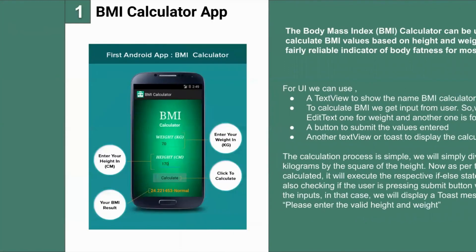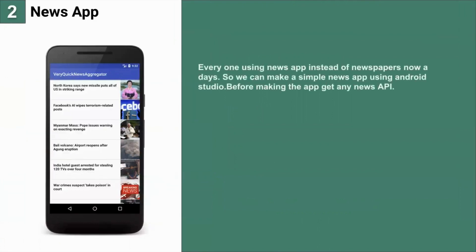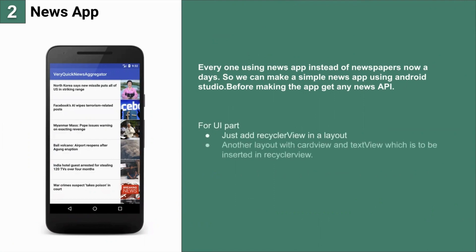The next app is a news app. Everyone is using news apps instead of newspapers nowadays, so we can make a simple news app using Android Studio. Before making the app, get any news API. For the UI part, just add a RecyclerView in a layout and another layout with a CardView and TextView to be inserted in the RecyclerView. With the help of a DB helper and JSON object, you can show news from the API in the RecyclerView.